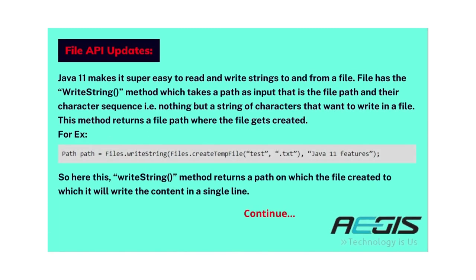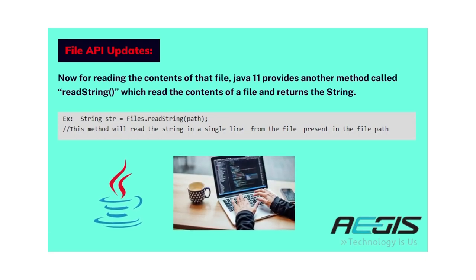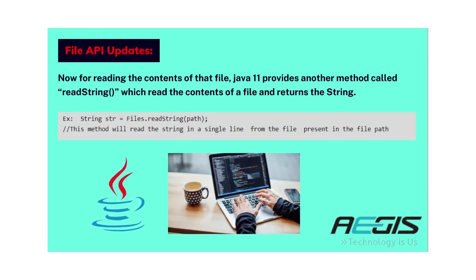The next feature is File API updates. Java 11 makes it super easy to read and write strings to and from a file. Files has the writeString() method which takes a path (the file path) and a character sequence (the string to write) as input. This method returns the file path where the file gets created. The writeString() method returns a path on which the file is created, writing content in a single line. For reading the file contents, Java 11 provides the readString() method, which reads the contents of a file and returns a string.